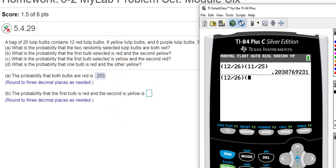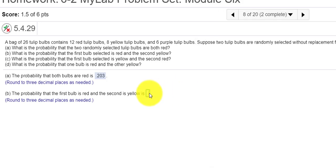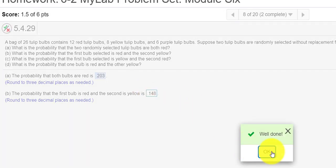But now the second one has to be yellow. So there's 8 yellow bulbs out of, now instead of 26, I'm going to say 25, because we've picked one bulb. And we get 0.148 when we round. Check answer, well done.